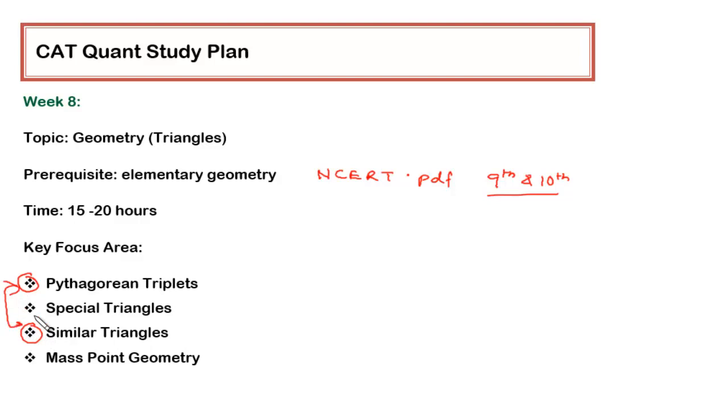These are the two very important topics. If questions from triangles come, there's a high chance—almost 99% chance—that the question would be either based on Pythagorean triplets or similar triangles or maybe a combination of those. Apart from that, the important things are special triangles.